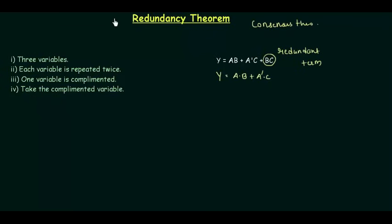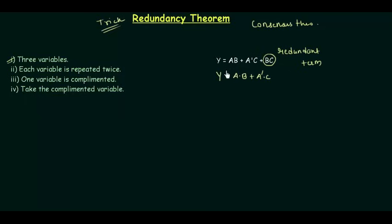This theorem is actually a trick in solving Boolean algebra. Let's see what the conditions are and how to use this theorem. The first condition is there must be three variables, and we have three variables a, b, and c in our function y. The first condition is satisfied.